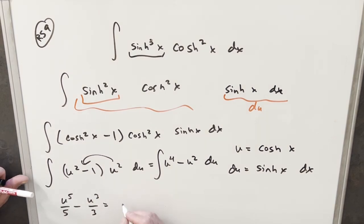And I think before we finish it off, I'll just factor a u cubed out of here. So we have u squared over five. We could do this in a few different forms. So we'll have u cubed times u squared over five minus one third.